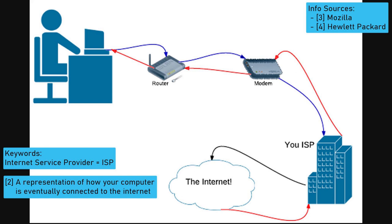Each computer in a building is connected to their local network using a router, and it is the router's job to make sure that information sent from the computer ends up going to the right place in the network. Normally, to get a signal from your computer to the router you will use Wi-Fi, but the router still needs to be connected to the internet.